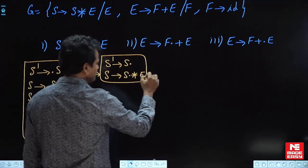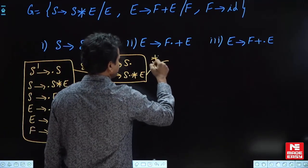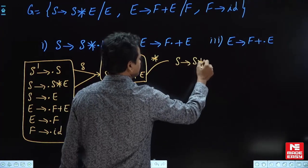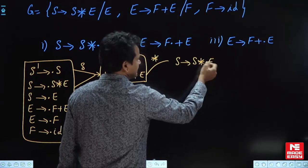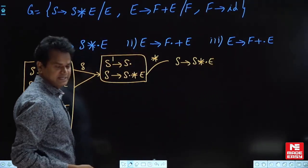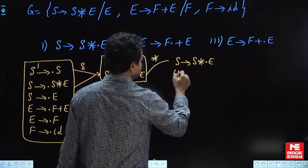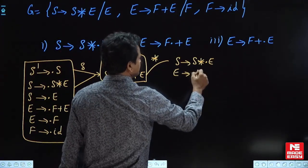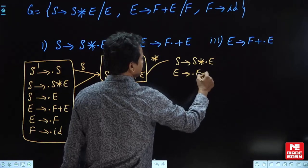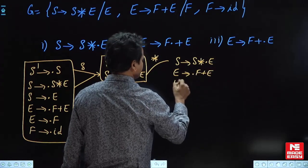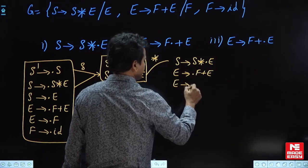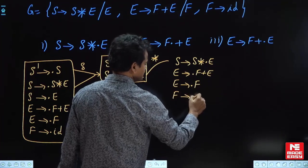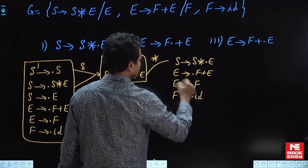If I write the go-to on star for this production: S→S*·E. Again, dot of E — add its productions. E has two productions: E→·F+E and E→·F. Again dot of F, add its production F→·id. Now close this state.